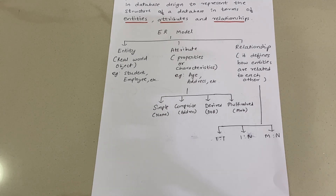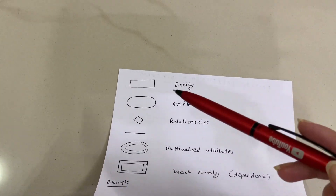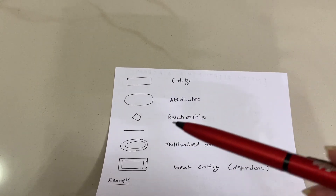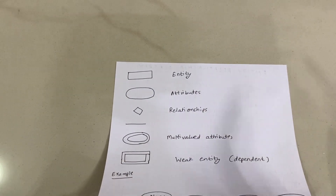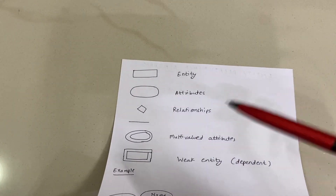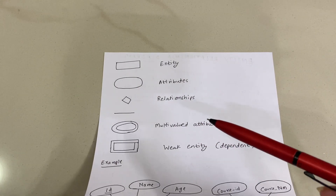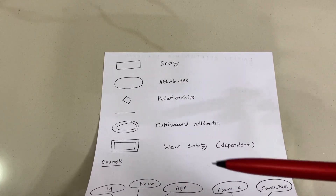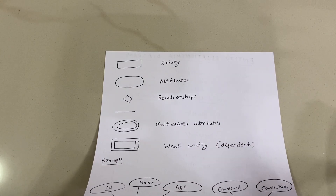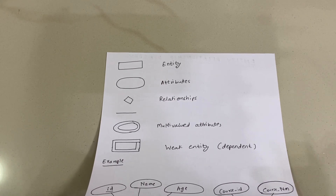Different shapes are used in ER diagrams to represent different components. A rectangle signifies an entity, an ellipse signifies an attribute, and a diamond represents a relationship. Lines are used to connect entities, attributes, and relationships. A double ellipse represents a multi-valued attribute, and a double rectangle represents a weak entity — an entity that is dependent on another entity.